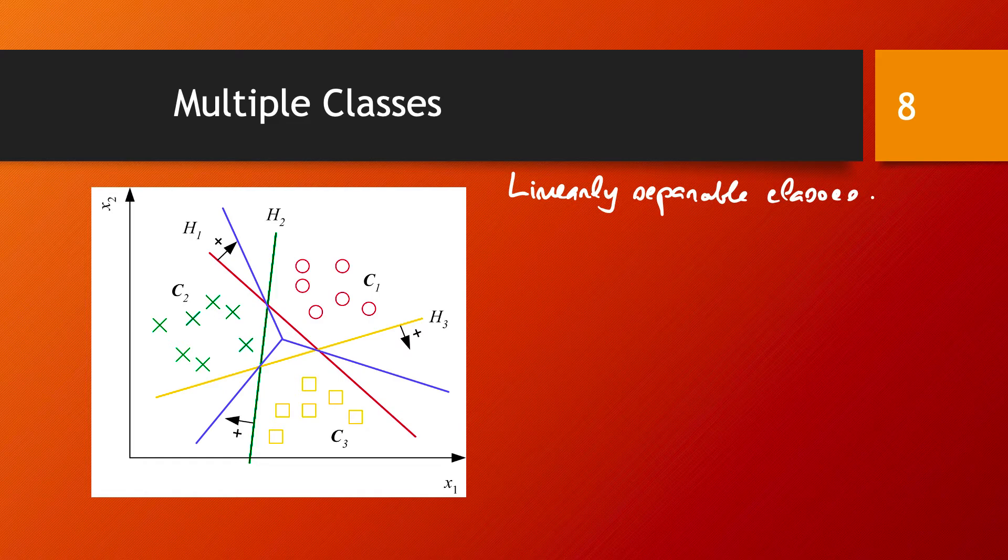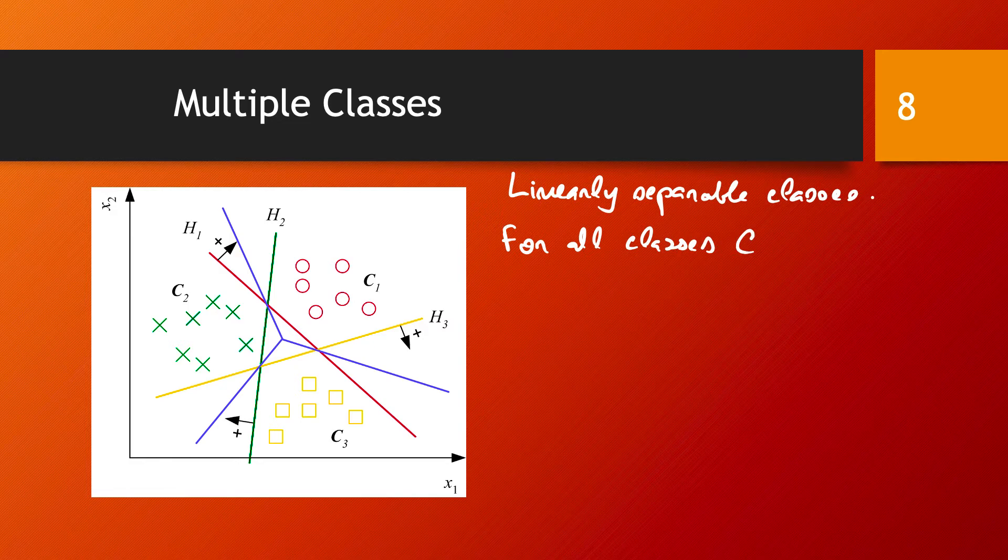So what we do is for all classes CI, and we may have, let's say, capital K such classes, we are going to define K discriminant functions.